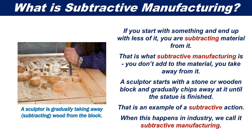A sculptor starts with a stone or wooden block and gradually chips away at it until the statue is finished. That is an example of a subtractive action. When this happens in industry, we call it subtractive manufacturing.